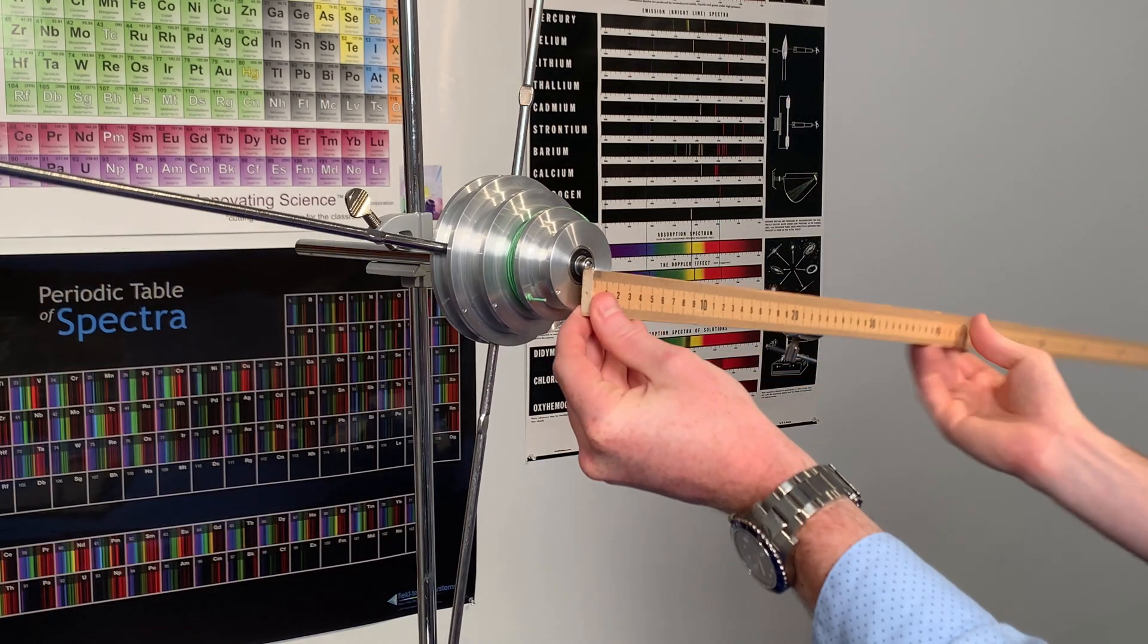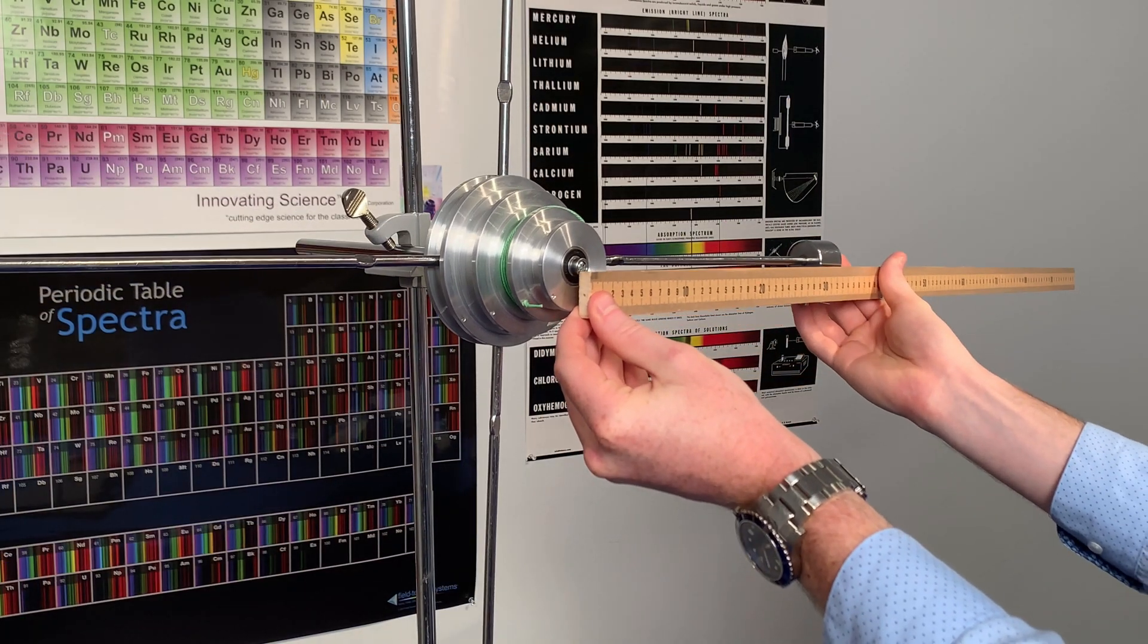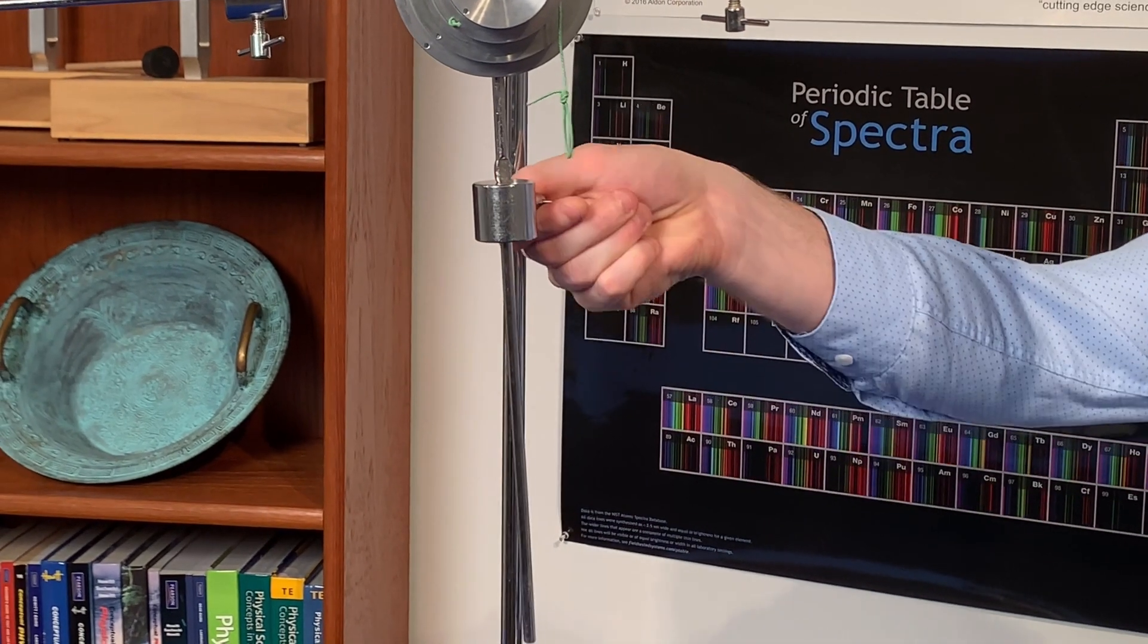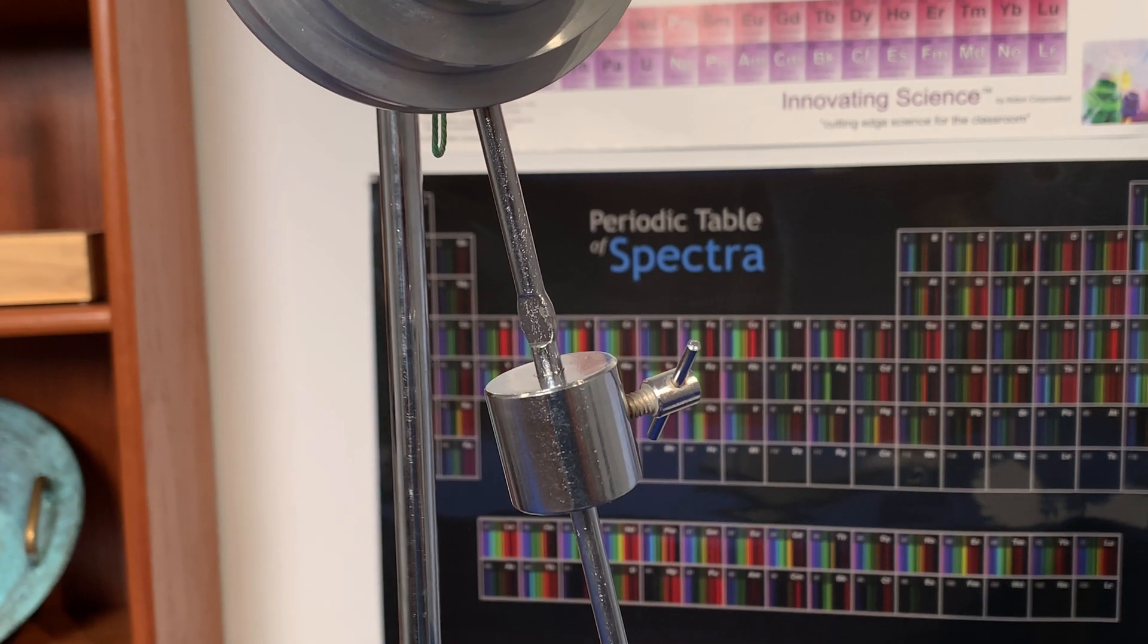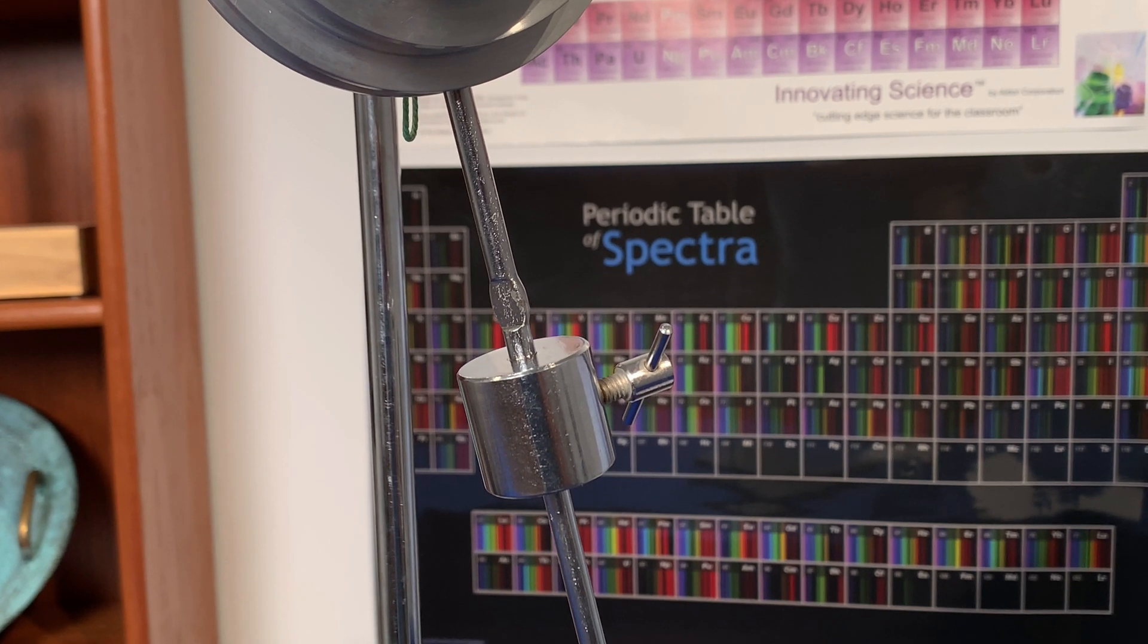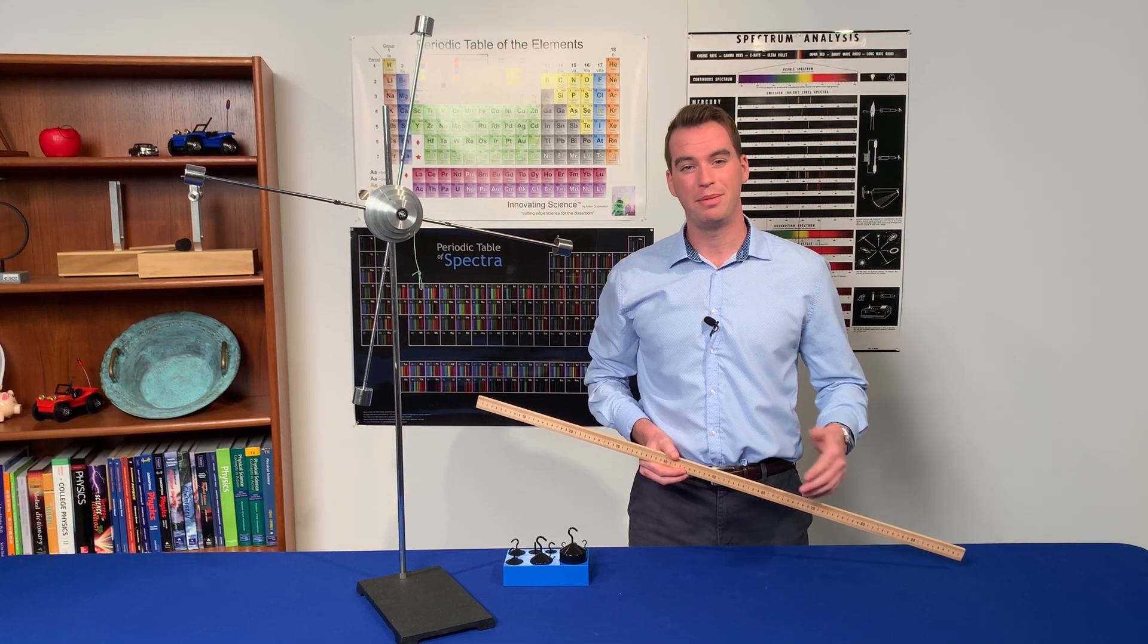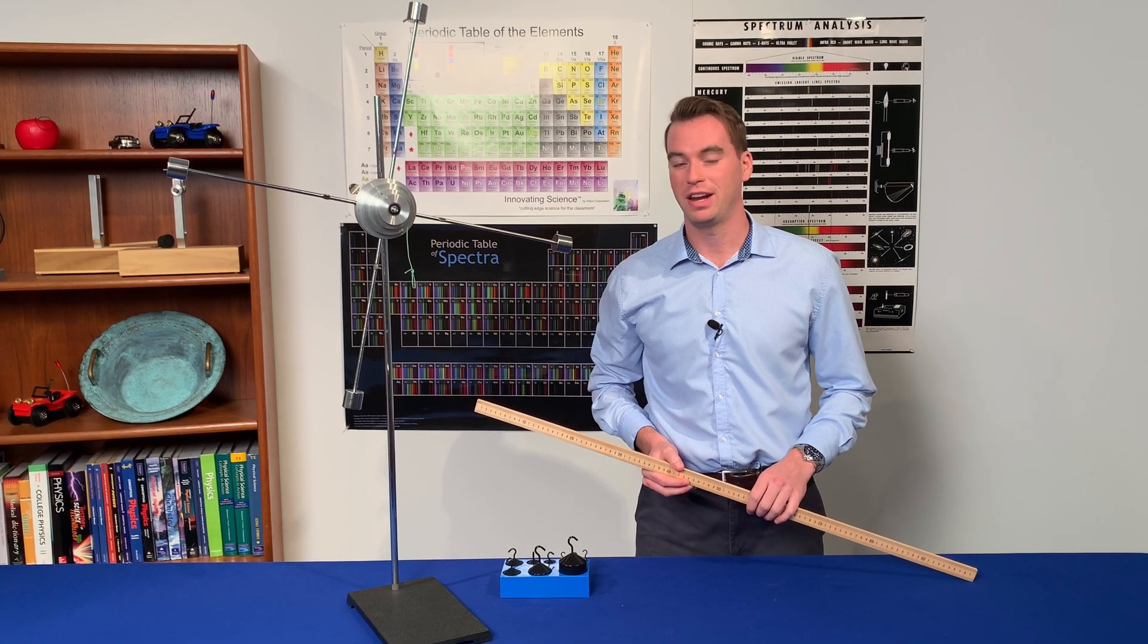For quantitative analysis, you can measure the distances of the masses from the hub to calculate their contribution to the overall rotational inertia, then add the rotational inertia of the hub and spokes. That value is given in the instructional guide, but calculating it can make a great activity for advanced classes.